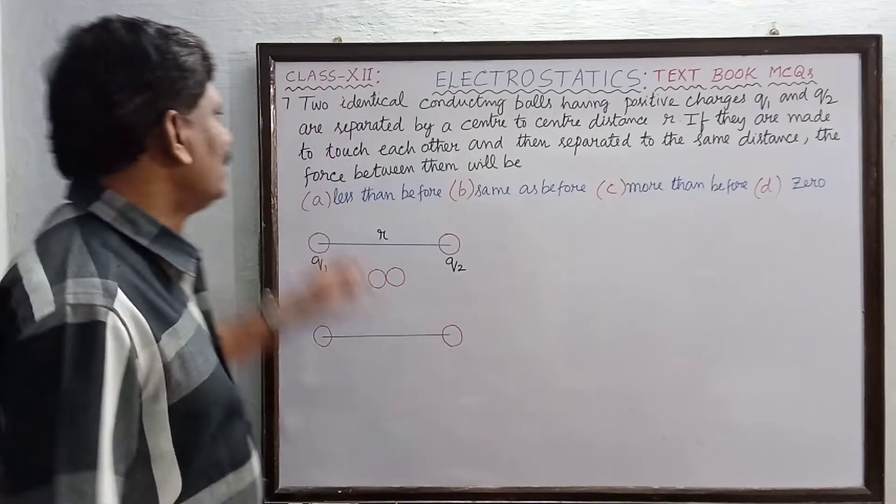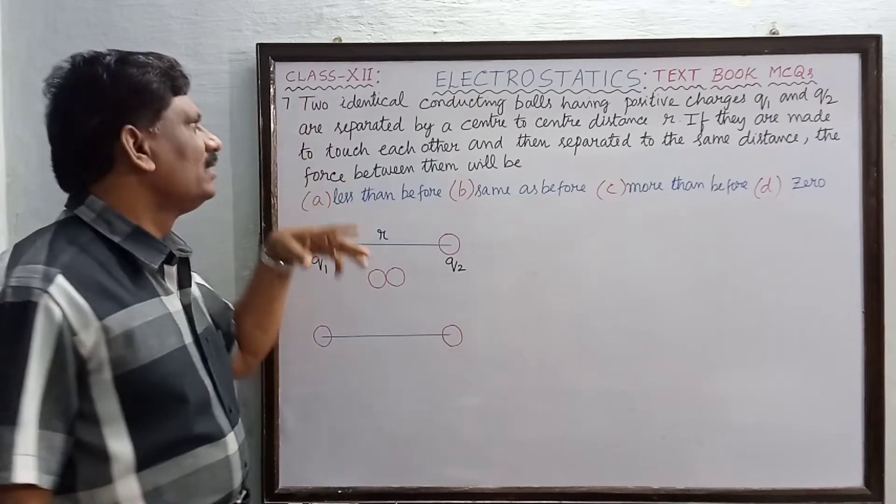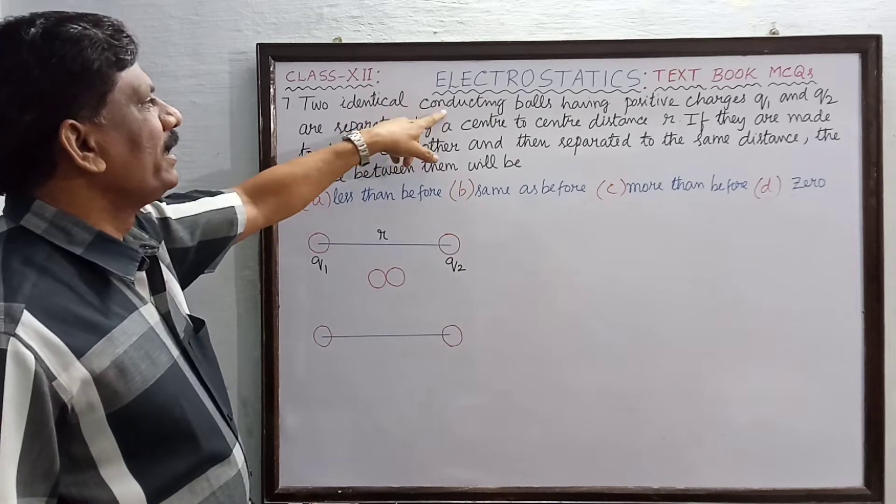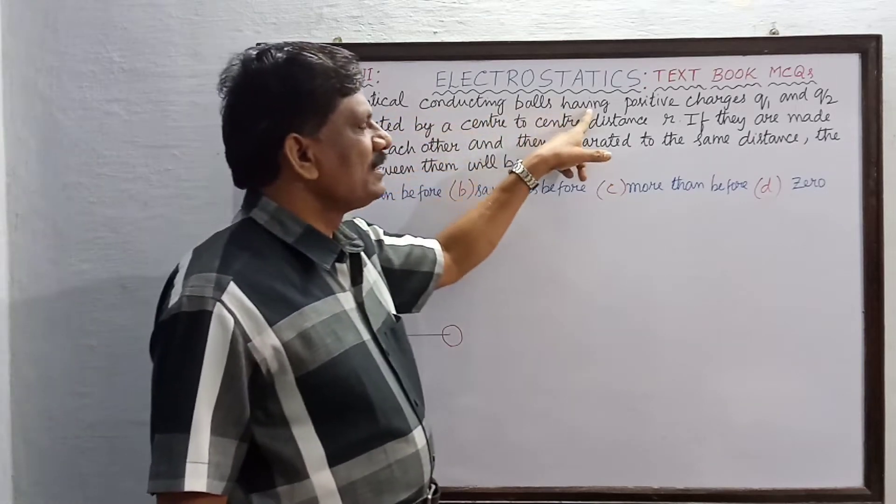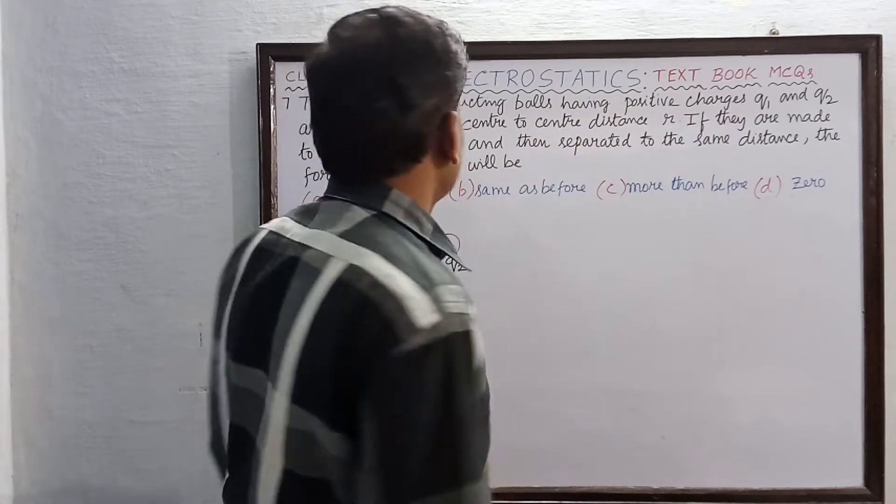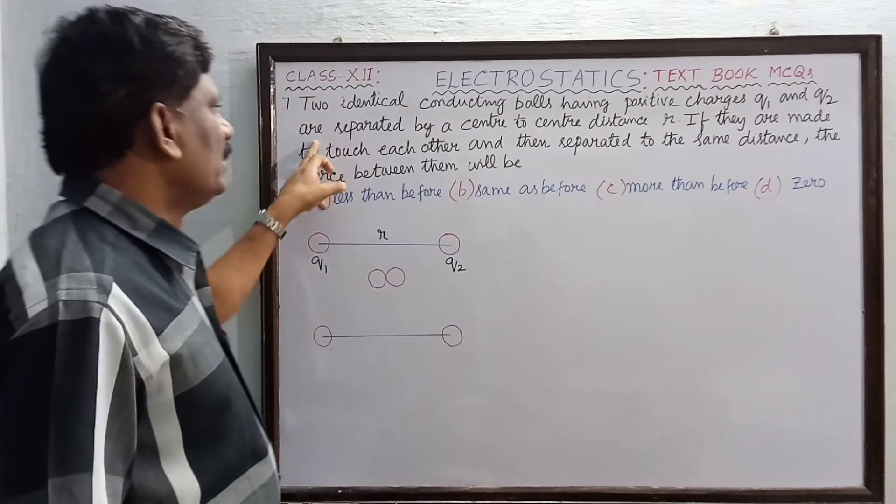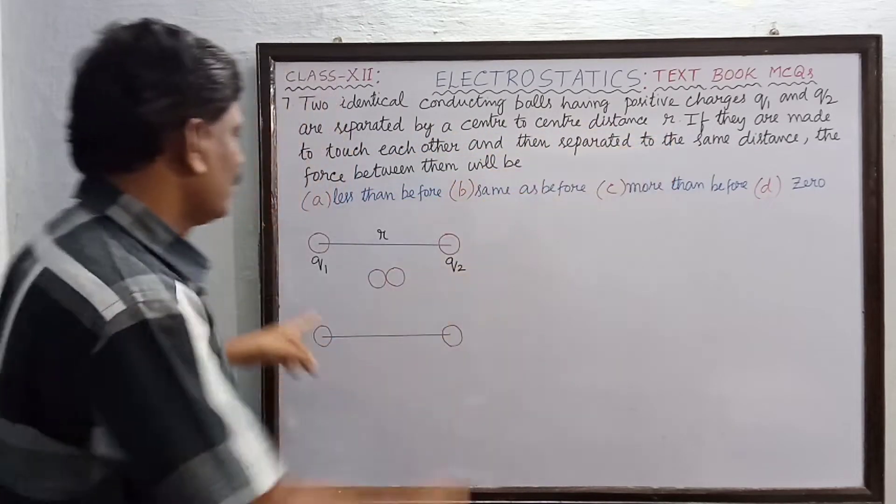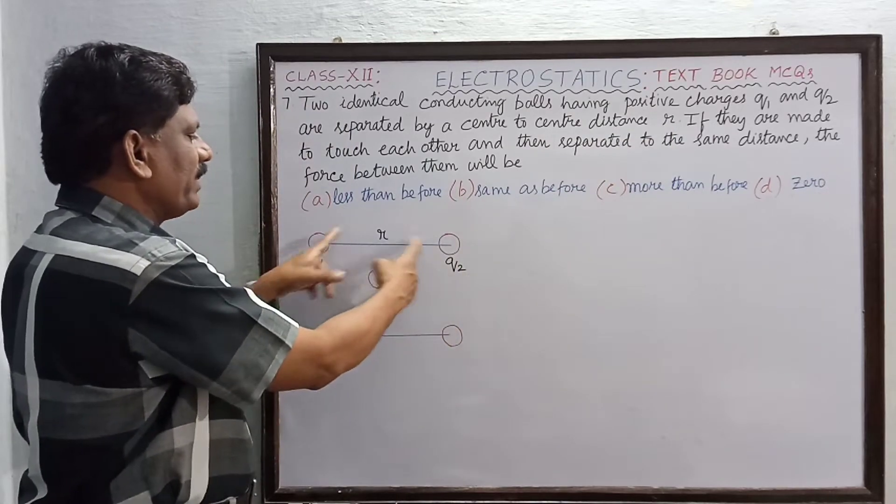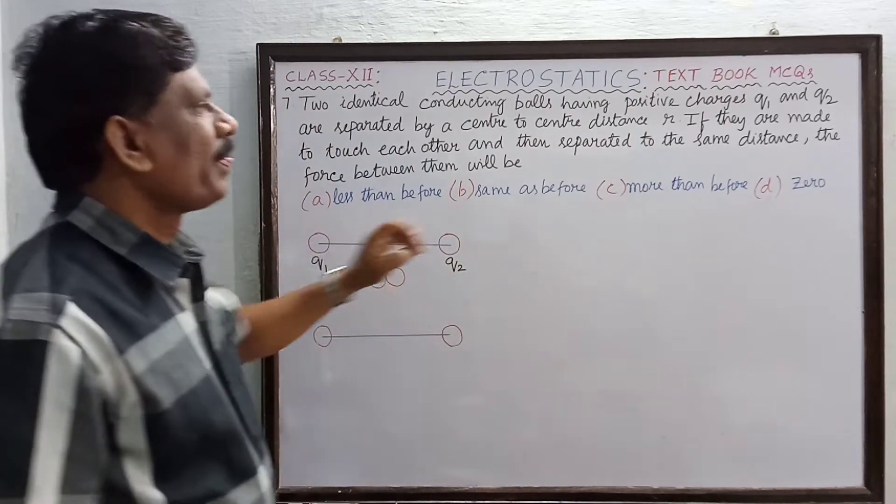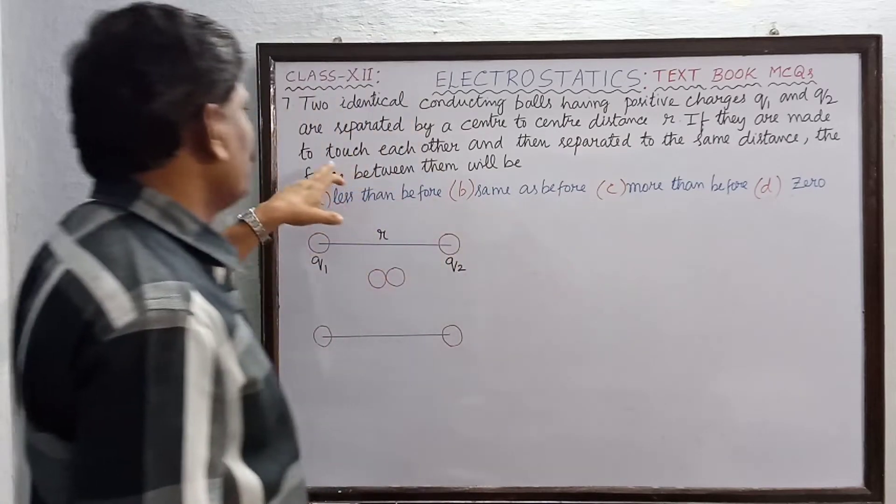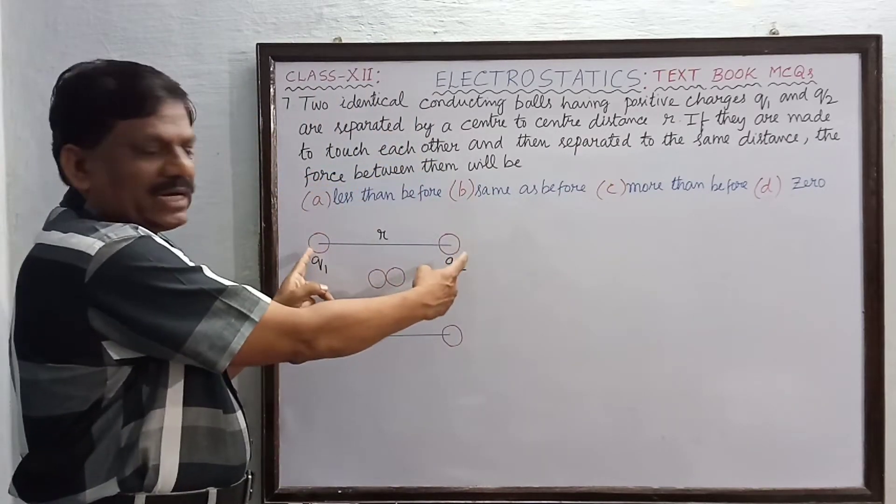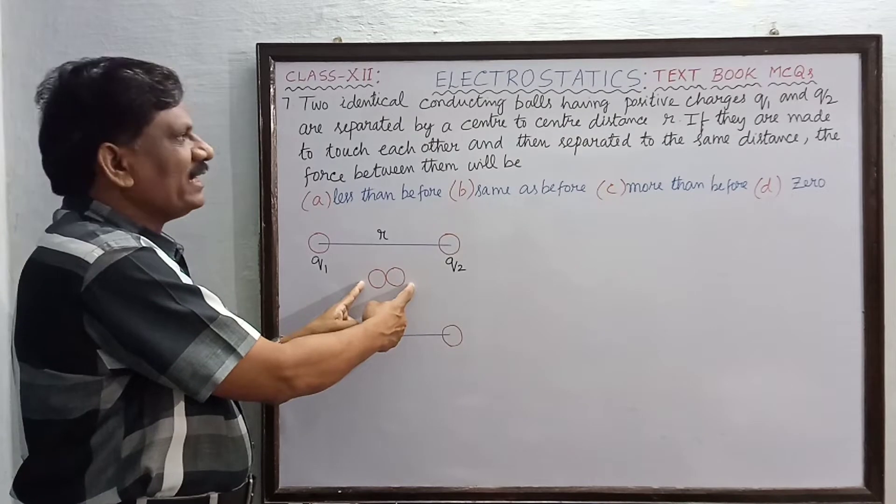Hi students, question number seven. Two identical conducting balls having positive charges q1 and q2 are separated by a center-to-center distance r. If they are made to touch each other and then brought closer, they are made to touch each other.